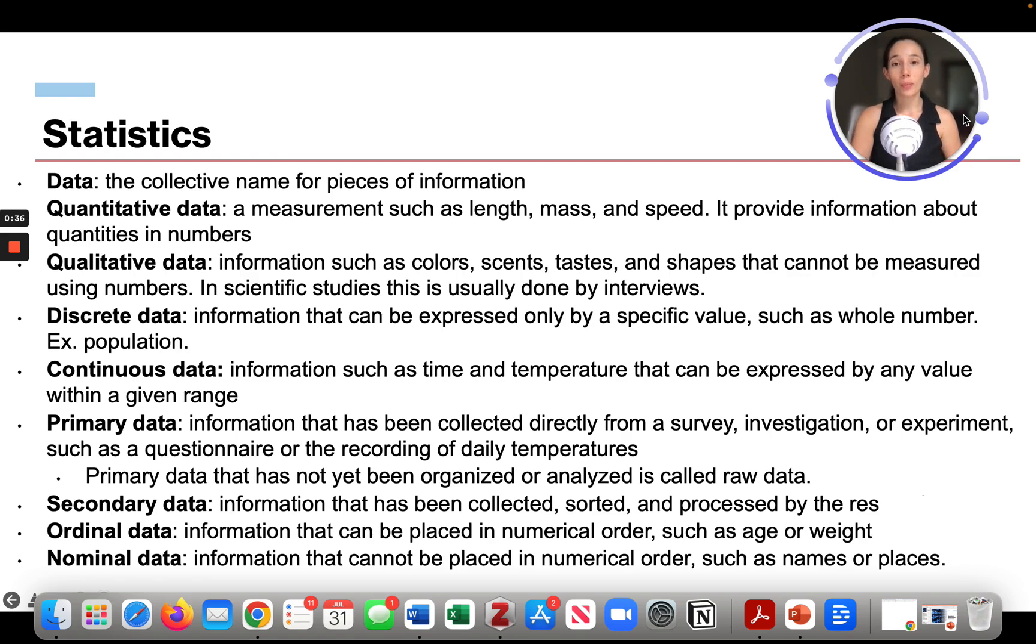Qualitative is information such as colors, scents, tastes, and shapes that cannot be measured using numbers. This can also be in scientific research. Qualitative data is usually what people say. If you interview different people, that's the type of data.